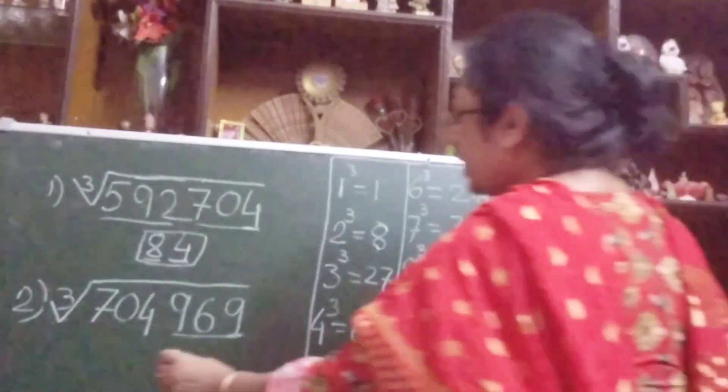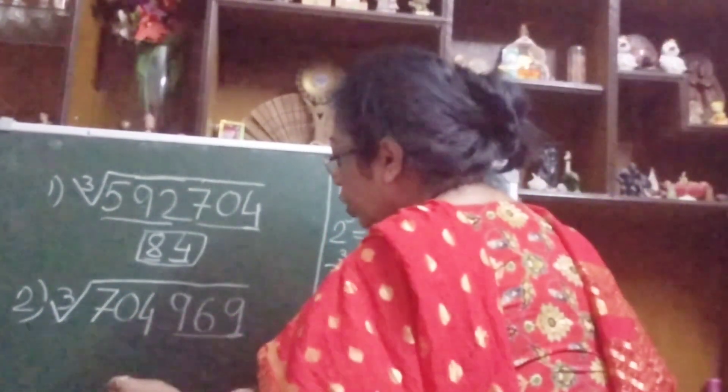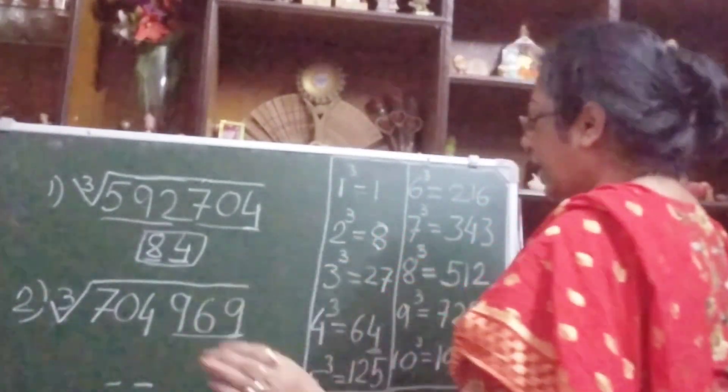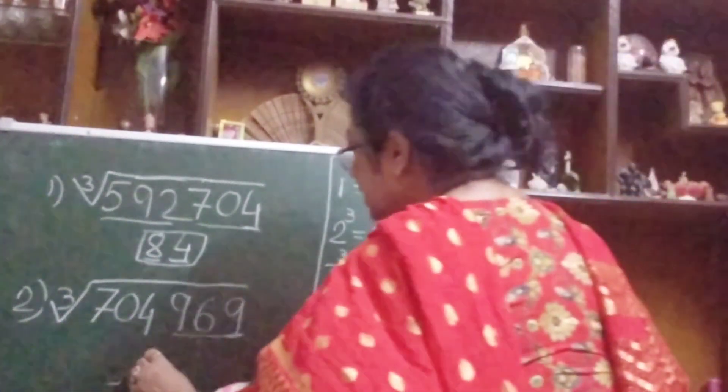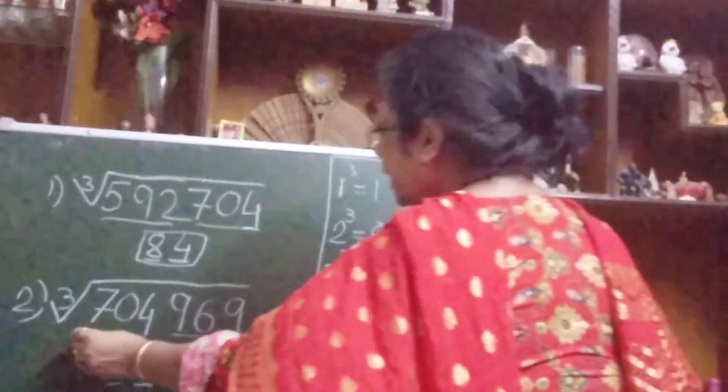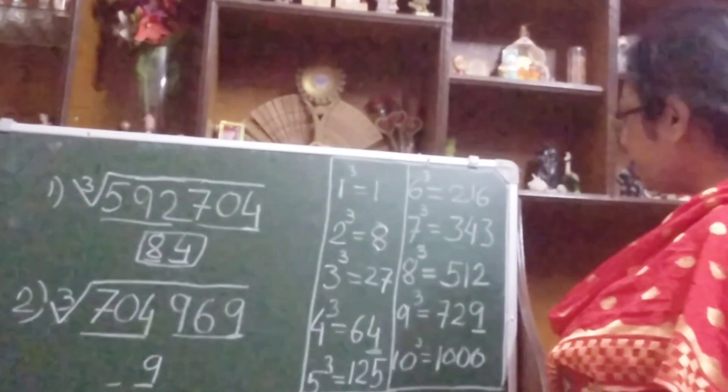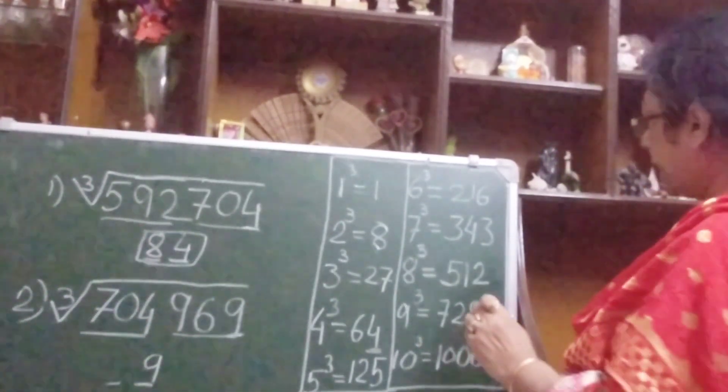So what we will do? See this is also a 6-digit number, so our answer will come in 2 digits. So first in the unit digit we will write 9. Now let's see, 704, where does 704 come?